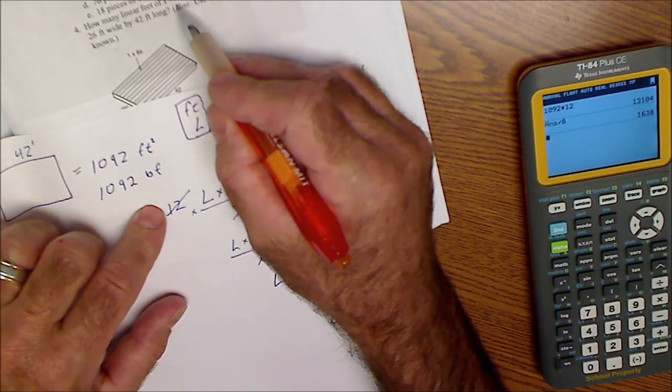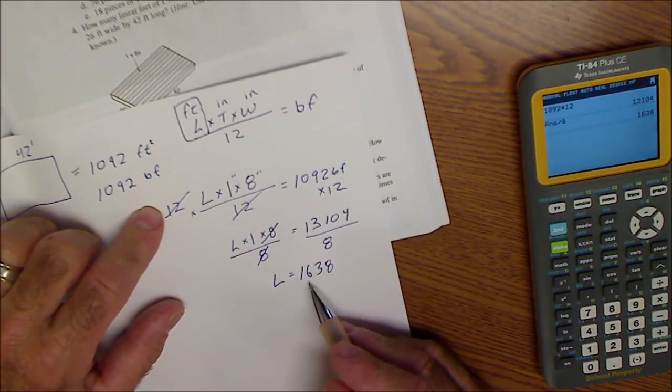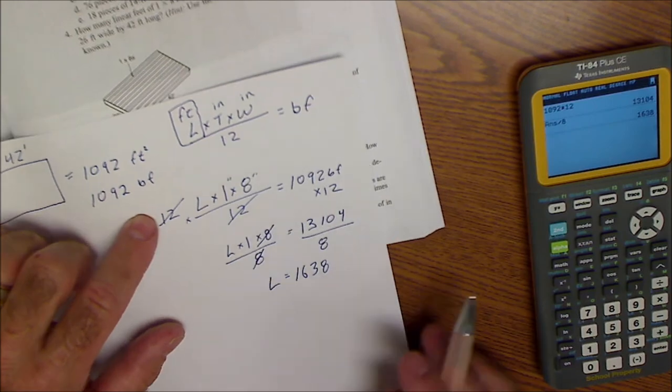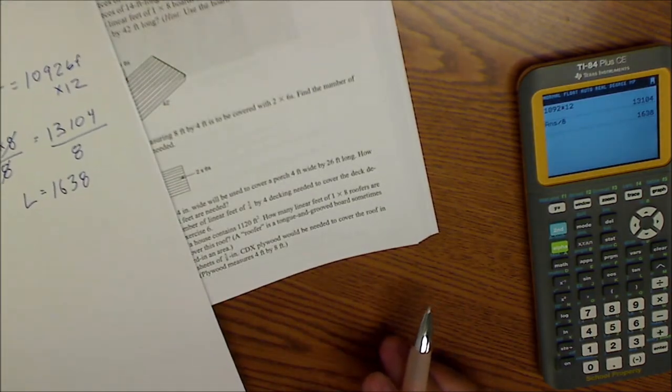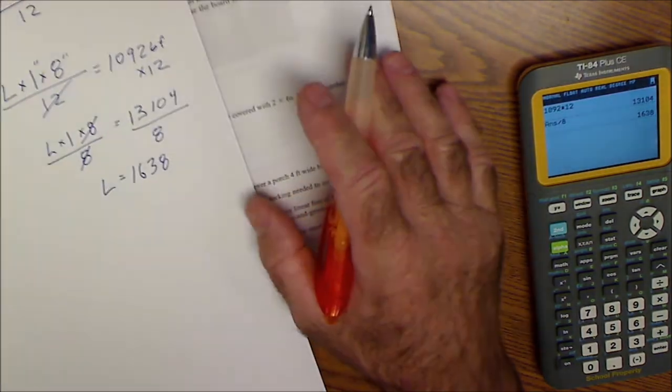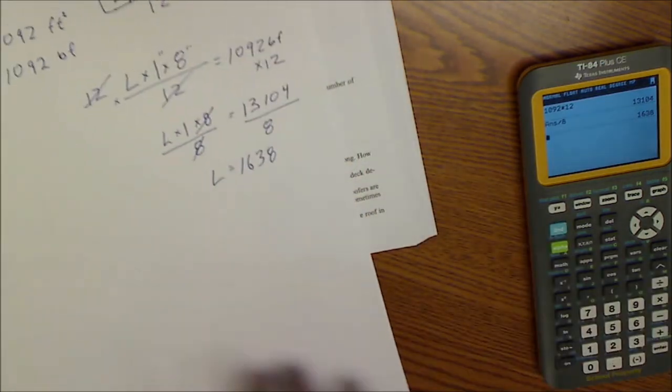Which is 1638 linear feet. So if I'm buying the materials for this job right here, how many linear feet of 1 by 8? Well, I'm going to need 1638 linear feet. Alright, well hopefully this is a good start to get you started on calculating board feet and linear feet and going back and forth between the two.